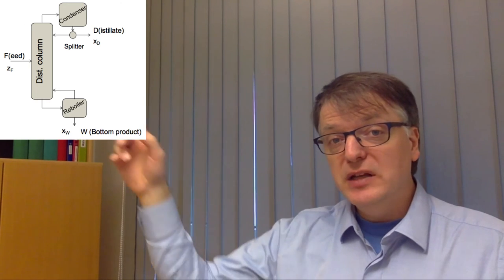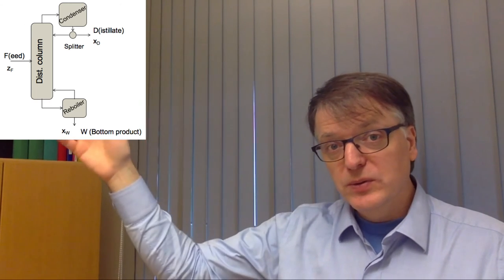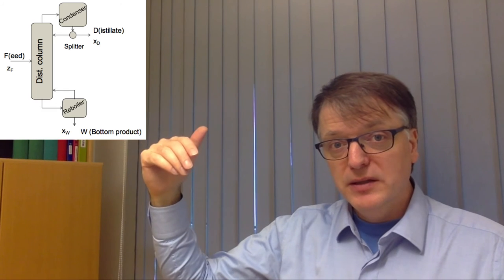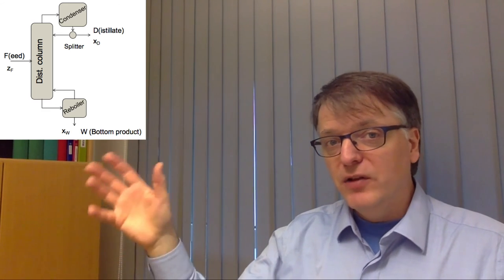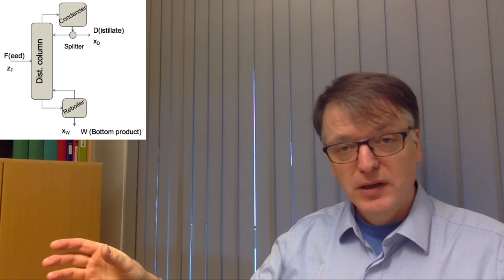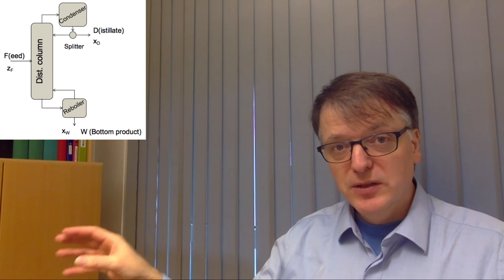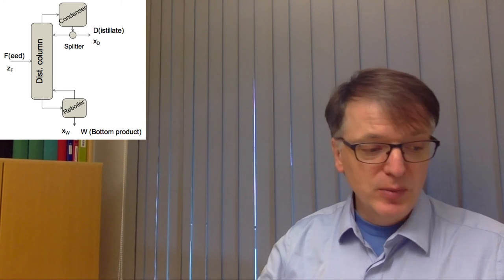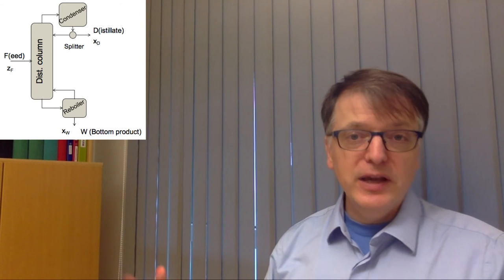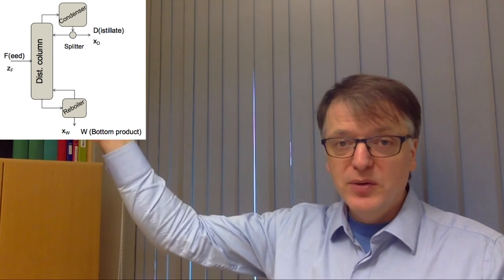If you for example change the splitter to let more liquid come back, then you will change the flow rates in the column. Which means that you need to put more energy in the reboiler. So there actually the energy use will change depending on how you set the splitter.